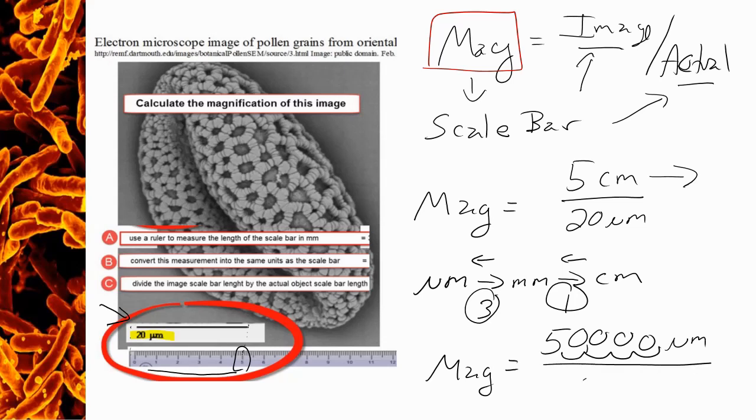Now we can do our 50,000 micrometers divided by our 20 micrometers to get a magnification of 2,500 times. So this image bar that we're seeing is 2,500 times larger than it is in actual size. That also means that the organism in the picture is also 2,500 times larger than its actual size.